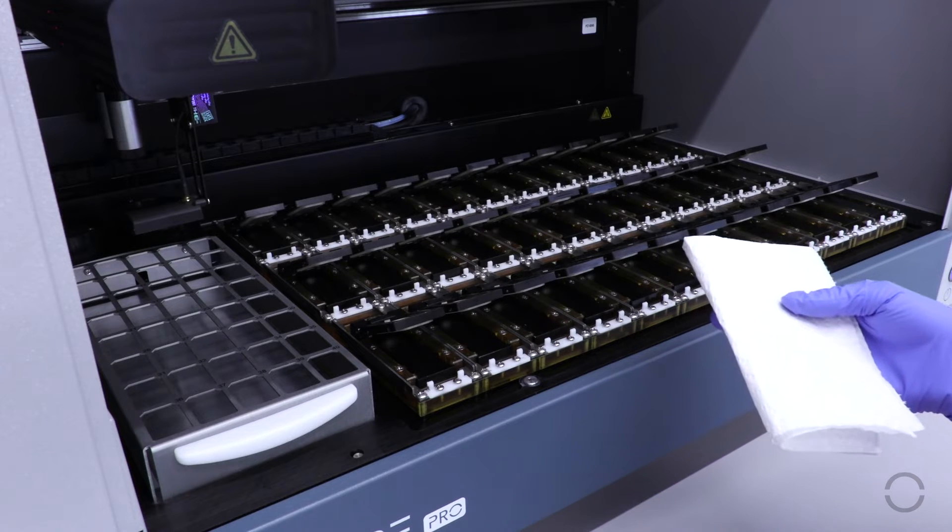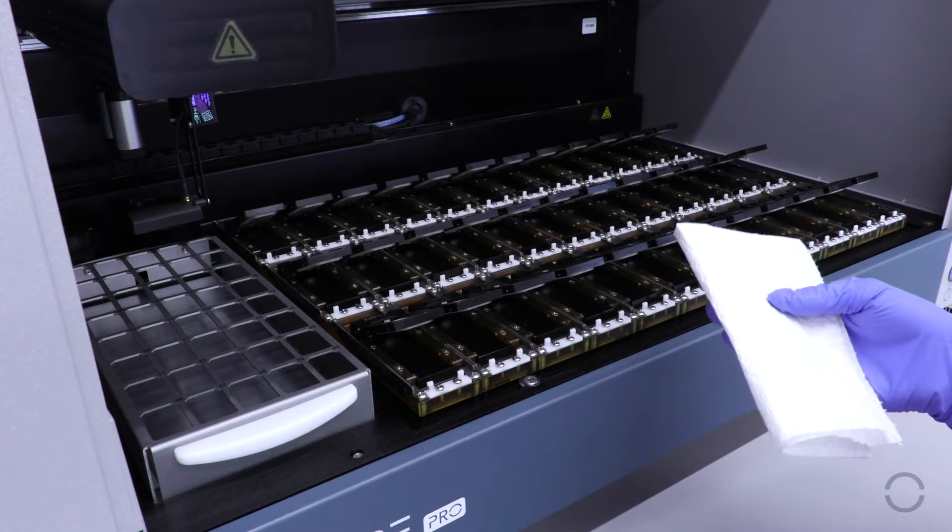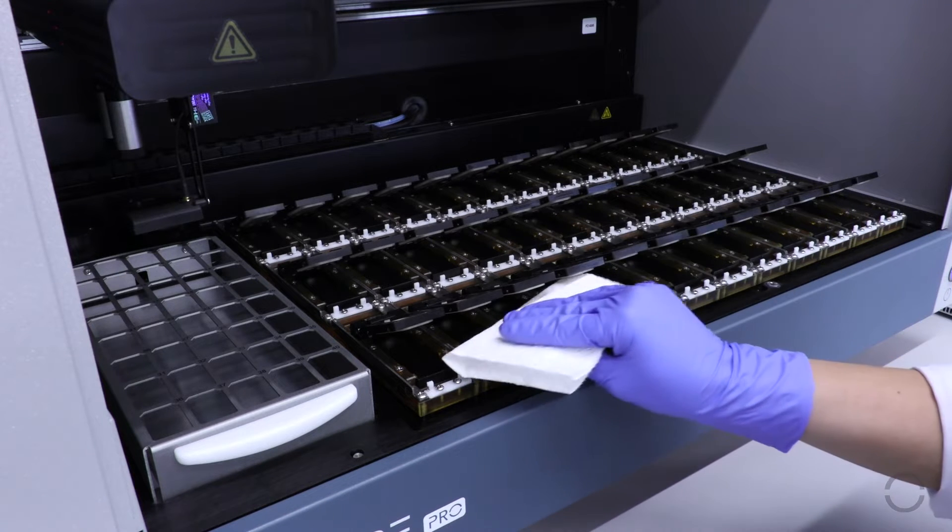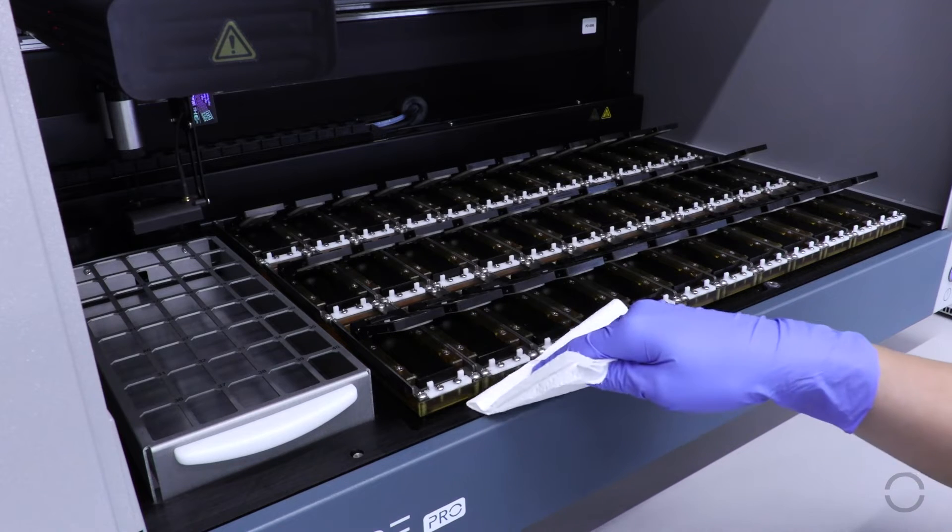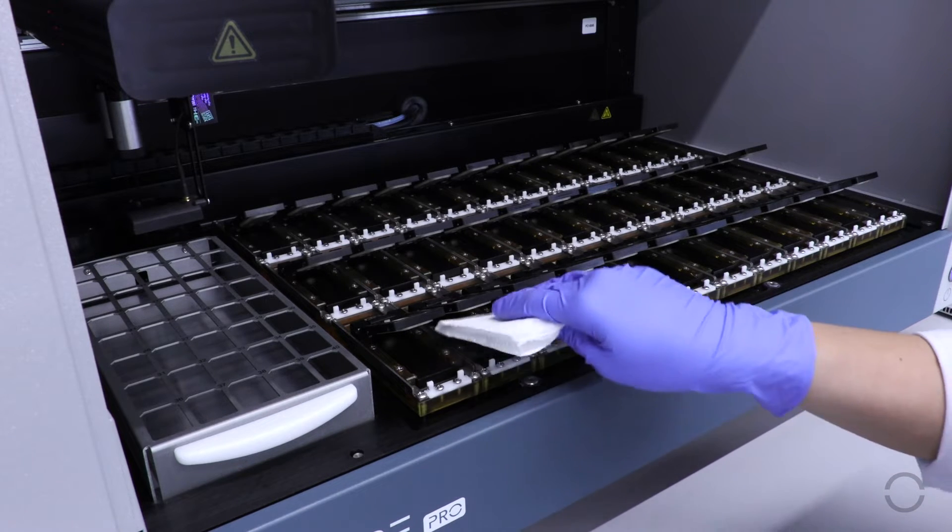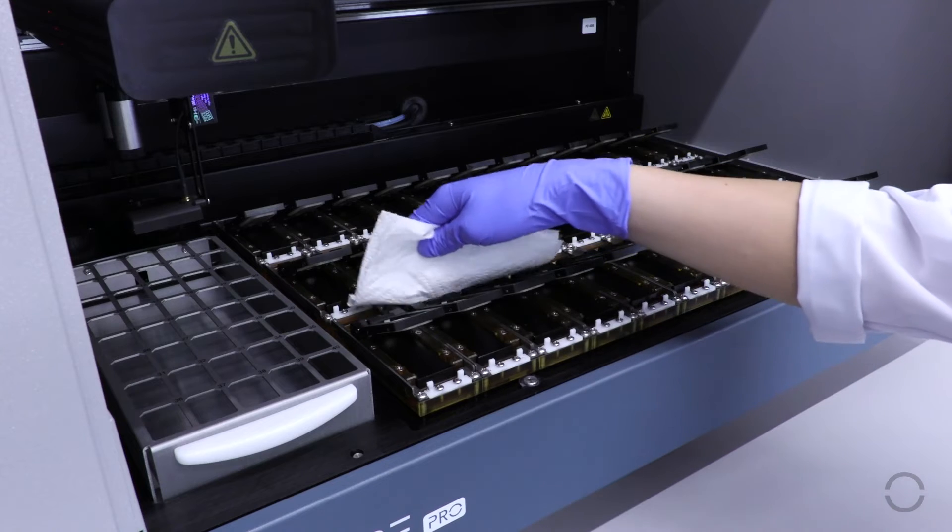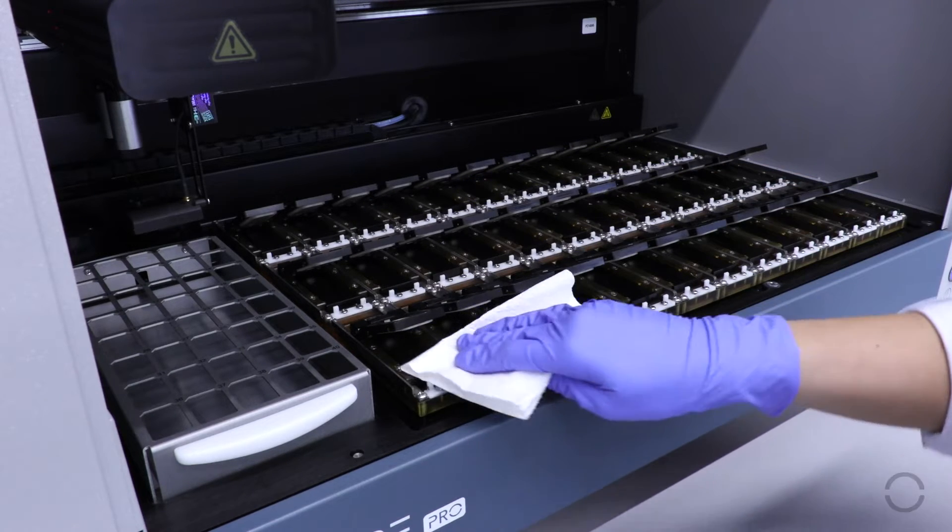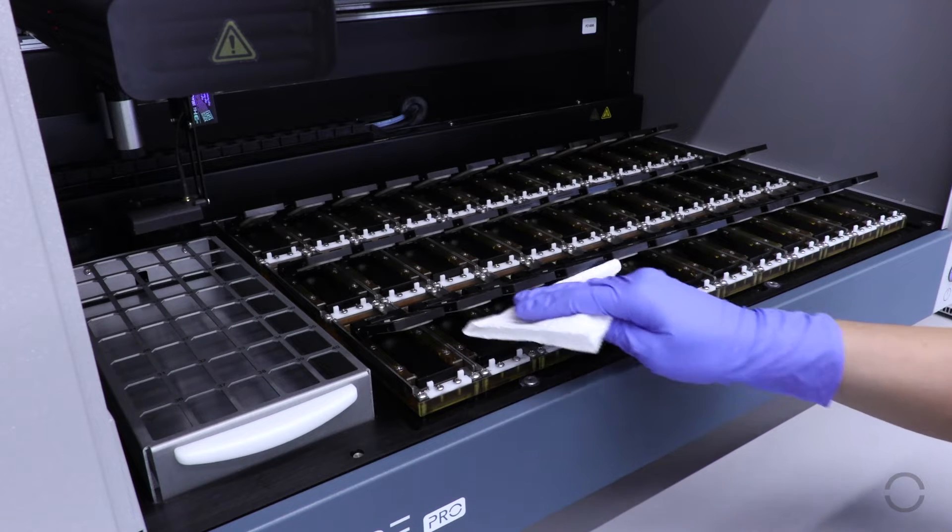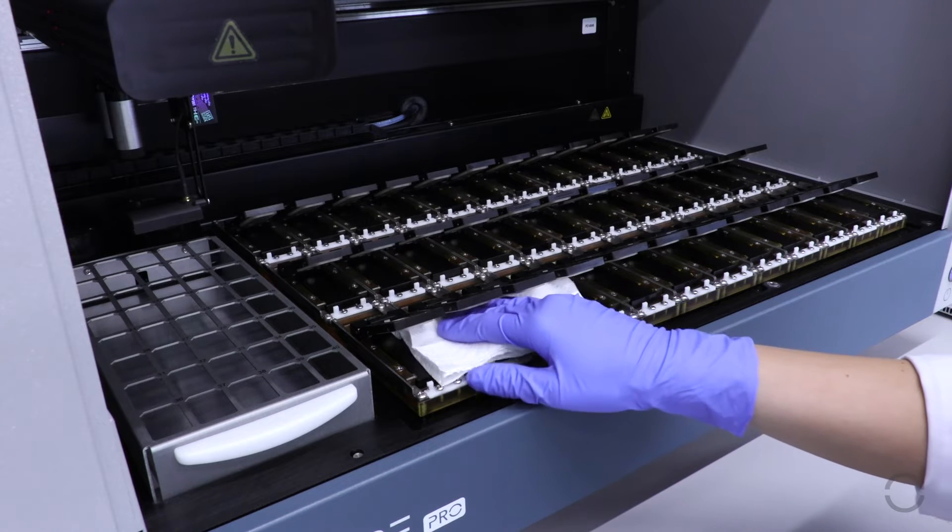After each run, use a soft paper towel to wipe the surface of the heater and around the inner edge of the slip holder. Insert the paper towel into the hinges to absorb any excess liquid remaining after the run.